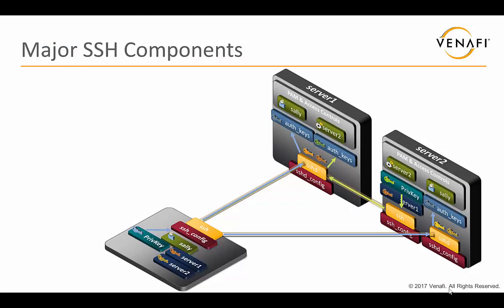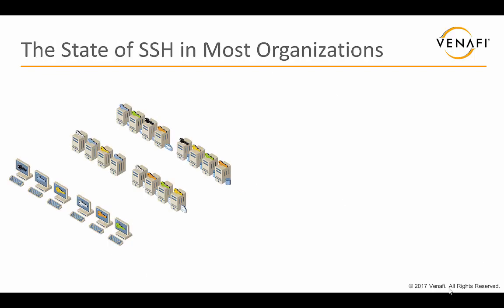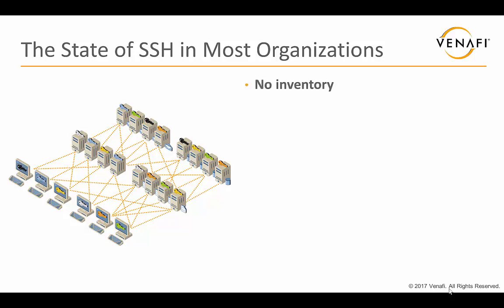If you've seen the last segment of SSH 101, you'd recognize this diagram. It shows several different components, and if we step back, we only have three players here — Sally and two servers — yet there are already a lot of authorized keys, private keys, and different connections. Most organizations have individual administrators managing SSH with no central inventory, so in environments with multiple servers they end up with a web of connections that nobody is centrally tracking.